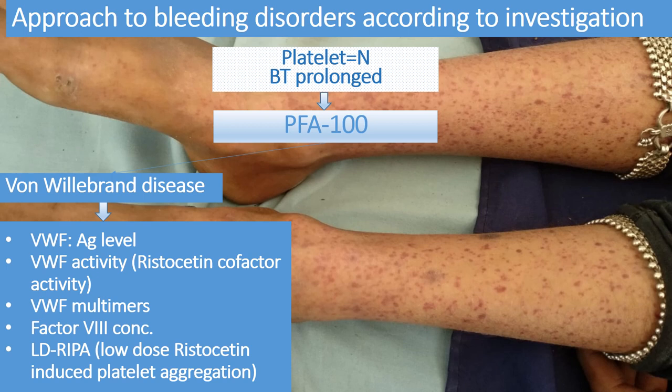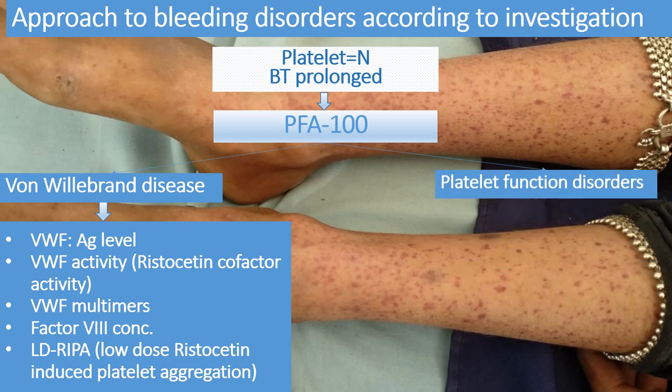According to the results of these investigations, determine whether it is type 1, 2, or 3 von Willebrand disease. In type 1 and type 3, von Willebrand factor antigen level is reduced — type 1 is mild while type 3 is severe. In type 2 VWD, von Willebrand factor activity is altered while the antigen level may be normal. Factor 8 concentration is very reduced in type 3. Results vary according to the subtype.